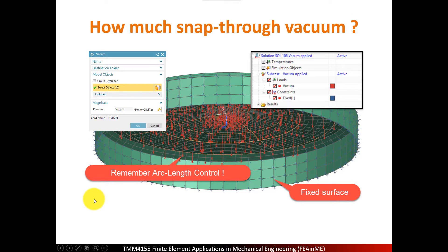First I want to optimize the vacuum, or find out how much vacuum is needed in order to get a snap-through behavior of the lid. What happens in practice is that the manufacturer pours hot jam in the glass and then closes the lid, and then a vacuum occurs and the lid will snap through. You must remember to use arc length control as well, because you're applying pressure and you might end up with some singularities.